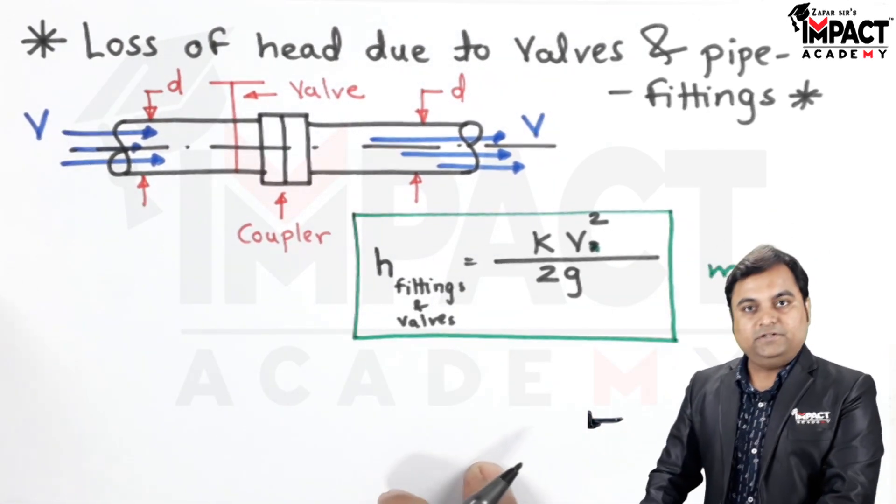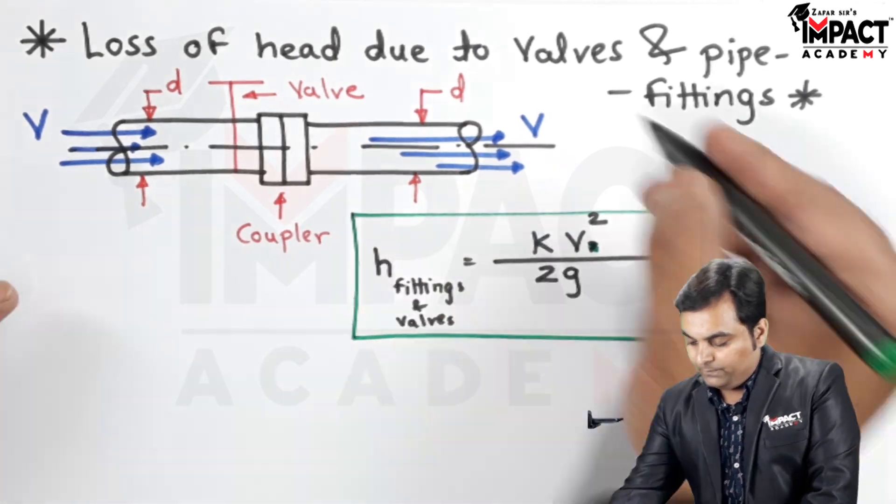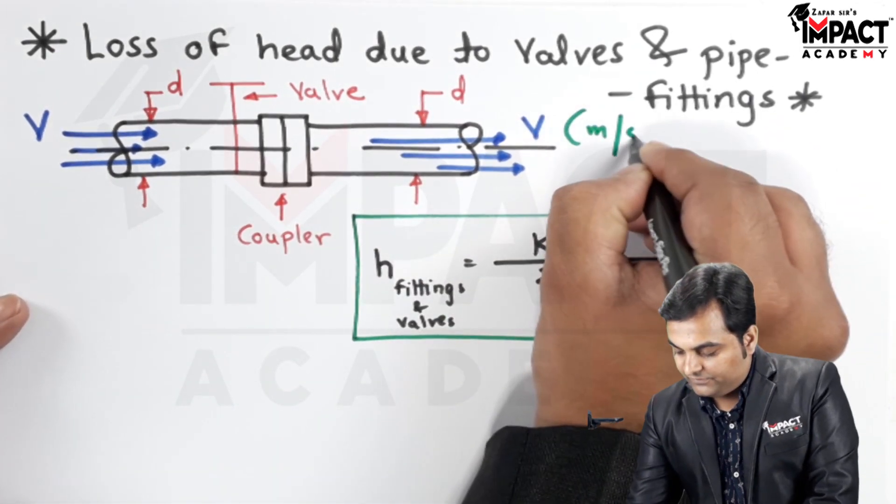It is in terms of meter, where v is the velocity of flow in terms of meter per second.